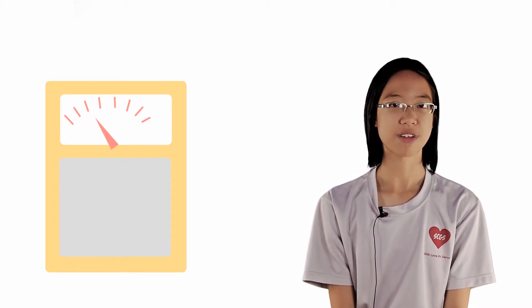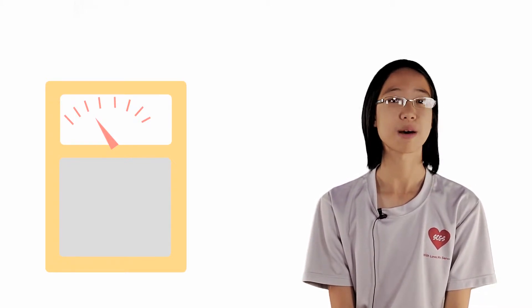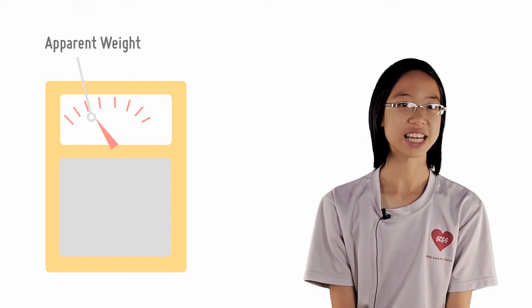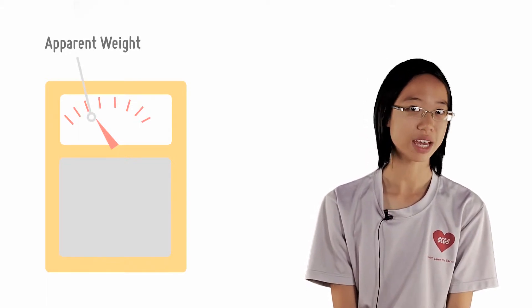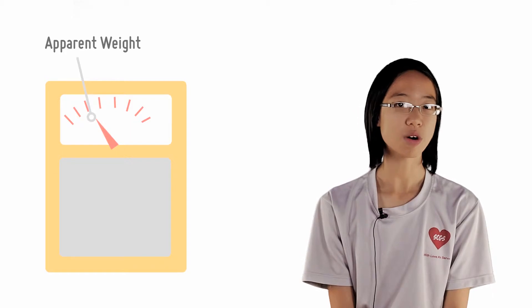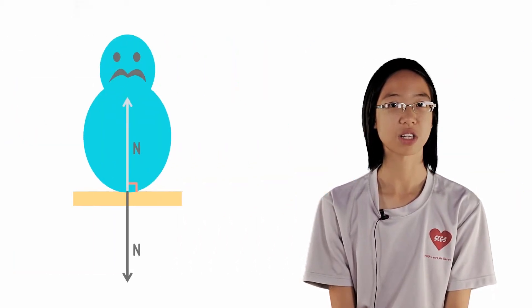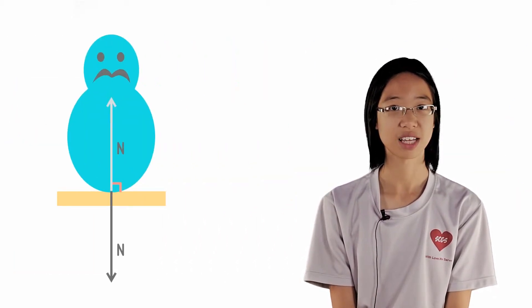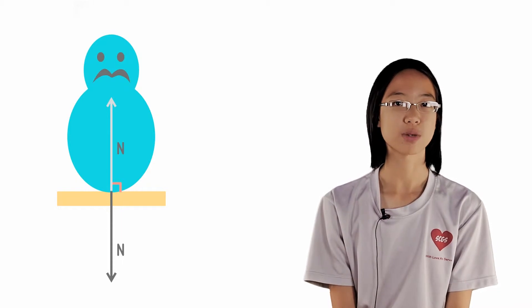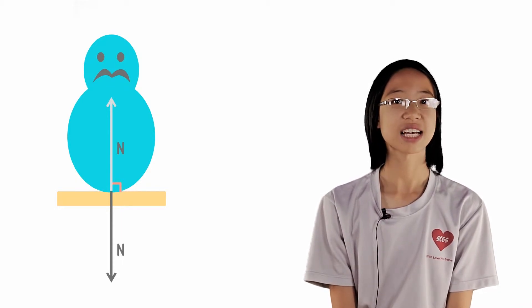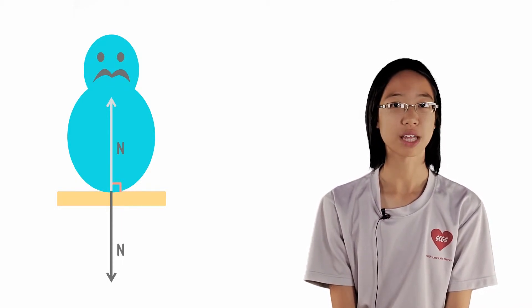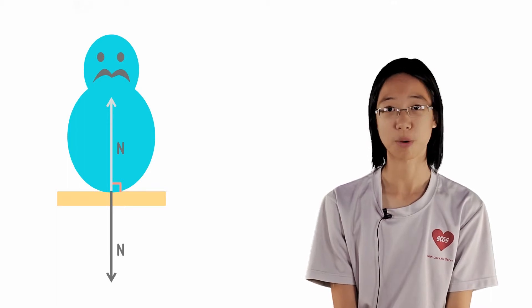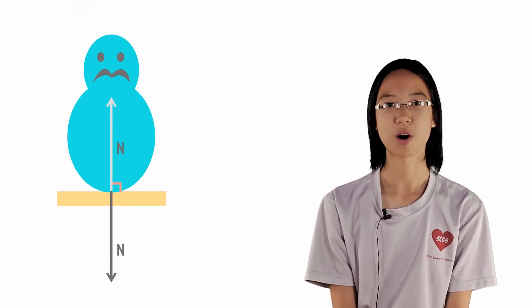The weight reflected on the weighing scale is known as apparent weight. It is the weight which you seem to weigh, or in other words, the normal contact force which your body exerts on the weighing machine you are standing on. This normal contact force which you exert on the weighing scale is exactly equal to the normal contact force the weighing scale exerts on your body, according to Newton's third law.